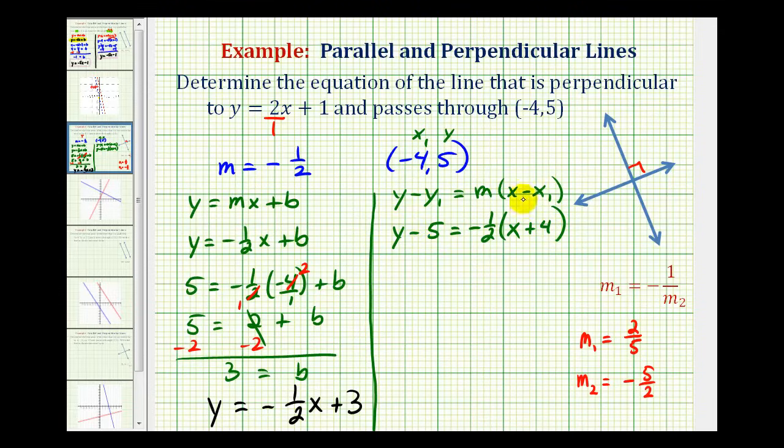Now we'll solve this equation for y. We'll distribute here. So we'll have y minus 5 equals negative 1 half x, then here we'd have minus 2. The last step to solve for y would be to add 5. So we'd have y equals negative 1 half x, and this would be plus 3.